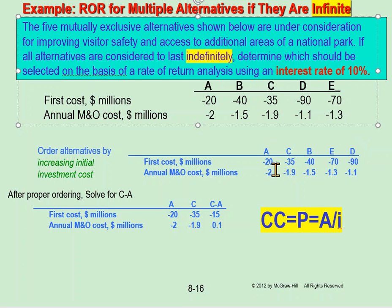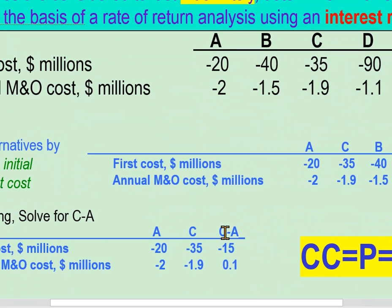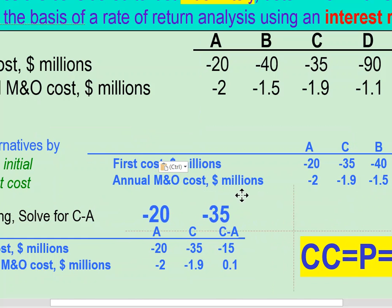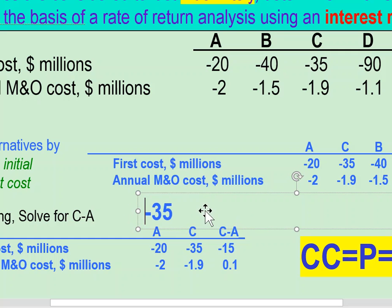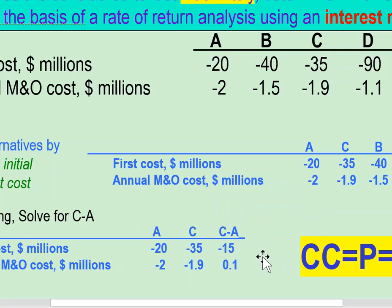Because it's incremental, I compare two projects at a time. I take the first two — least investment A and next C — then the incremental cash flow is C minus A. So: negative 35 minus negative 20 gives negative 15. Minus times minus is positive, so it's negative 35 plus 20, which equals negative 15 million.